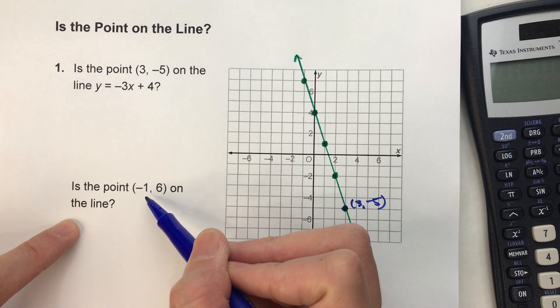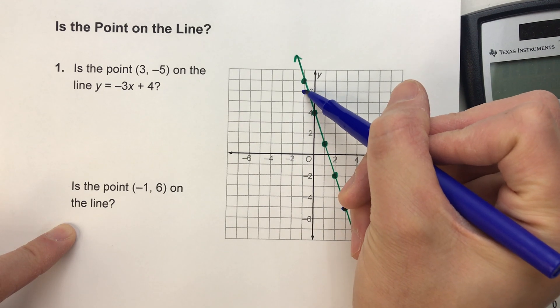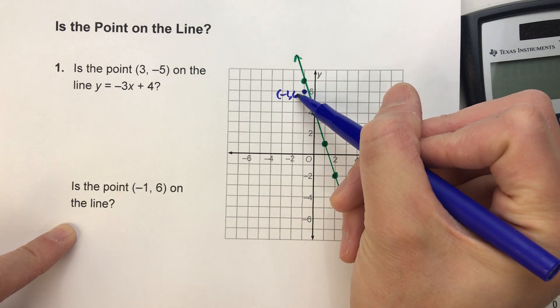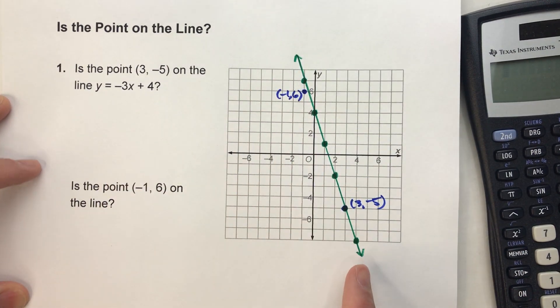Similarly, is the point (-1, 6) on this line? Well here's -1, here's 6, no, that one's not on the line. Alright, so it's pretty easy to answer with the graph.